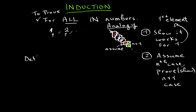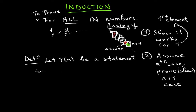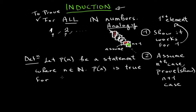Here is the definition of proof by induction. Let P of n be a statement where n is an element of the naturals. This proof is to prove something — your theorem — works for all naturals. This basically shows that P of n is true for all n values that you give me, because this is a function.